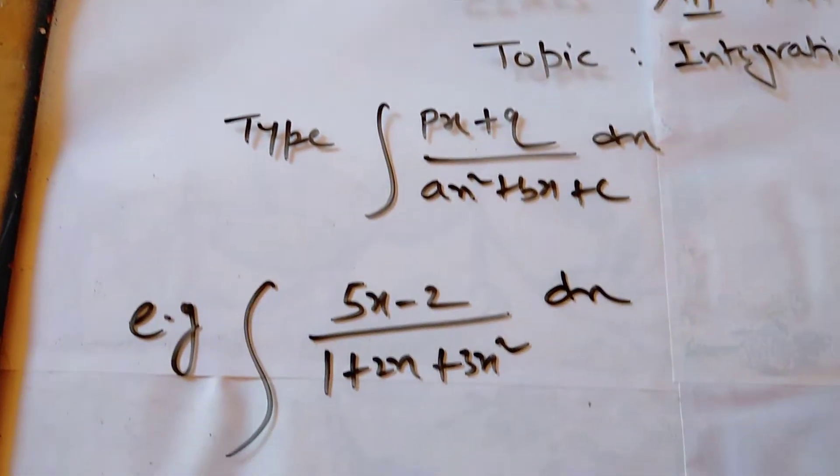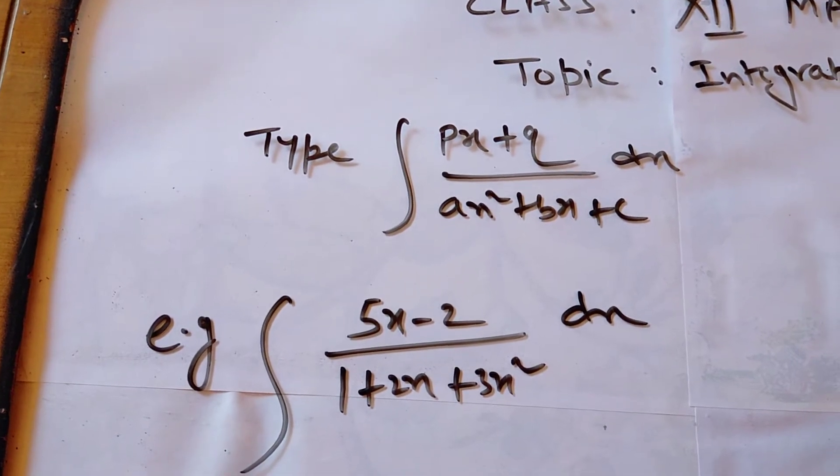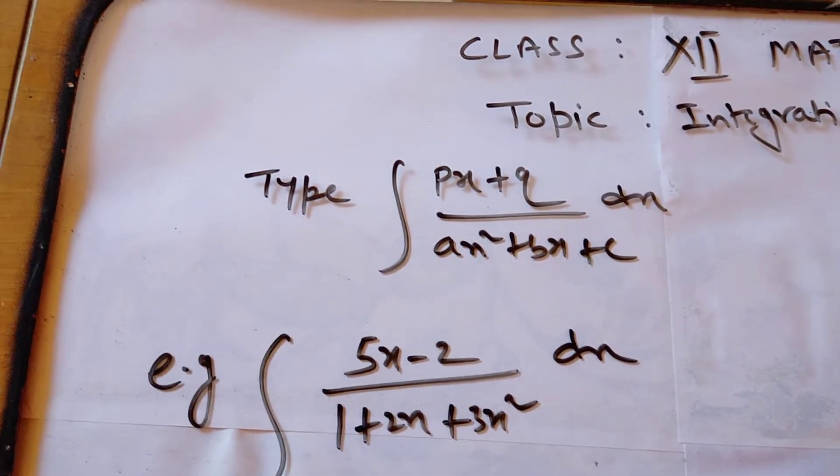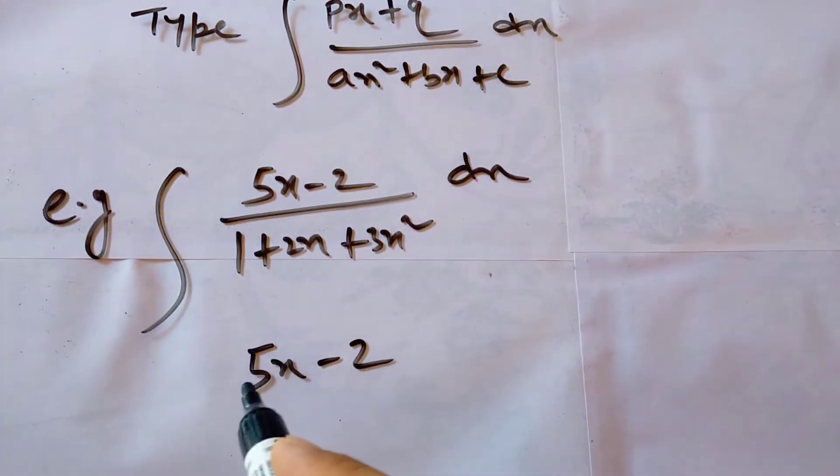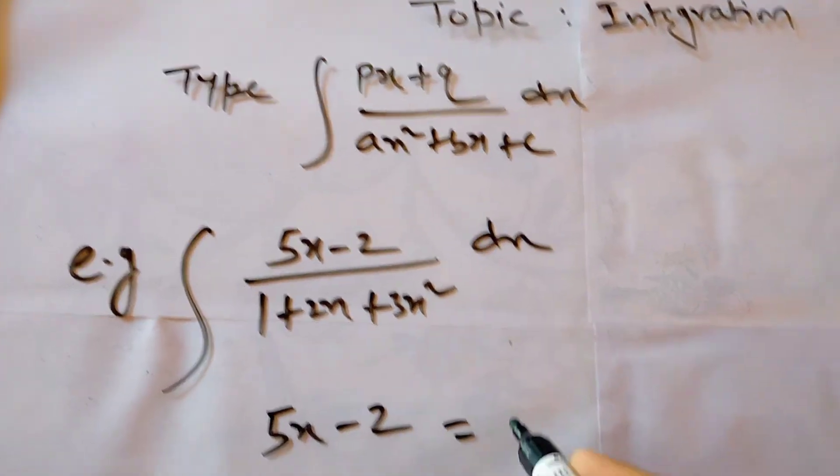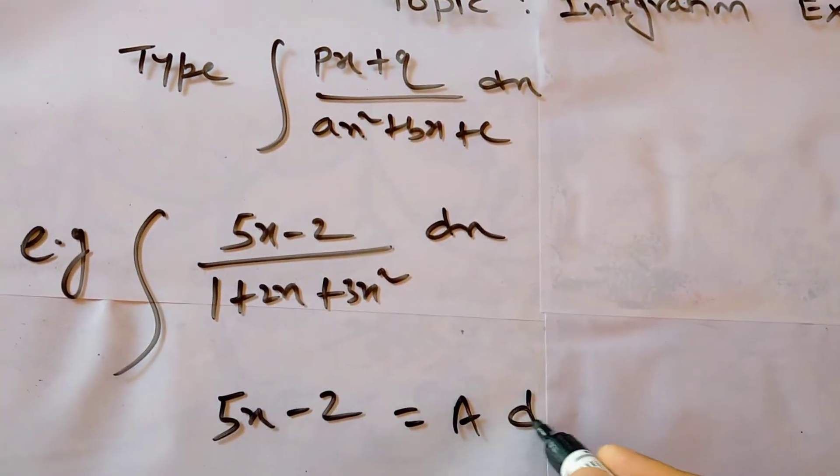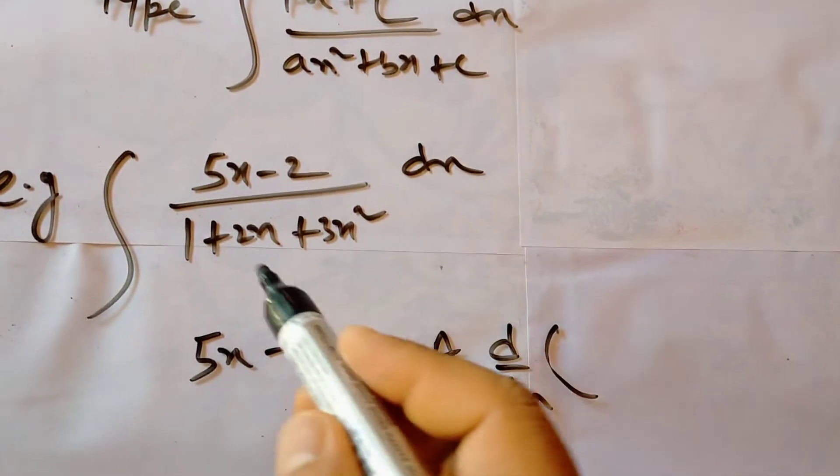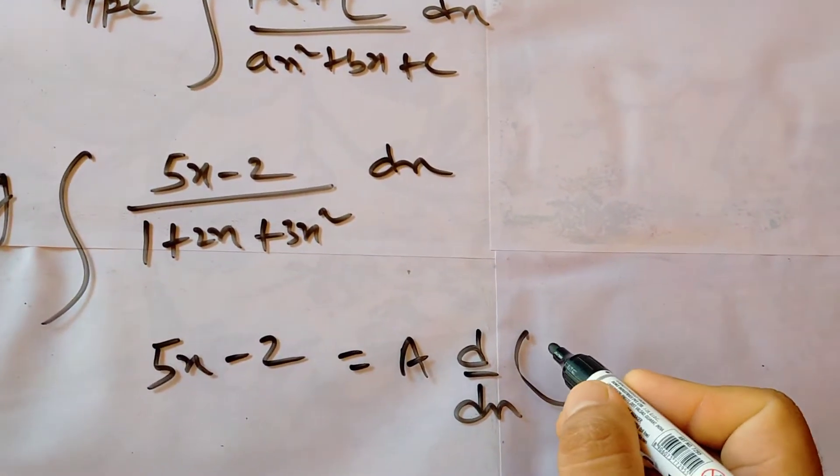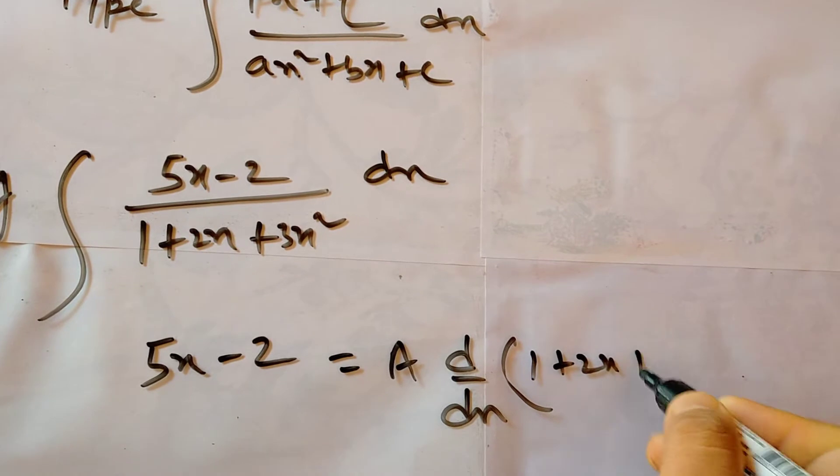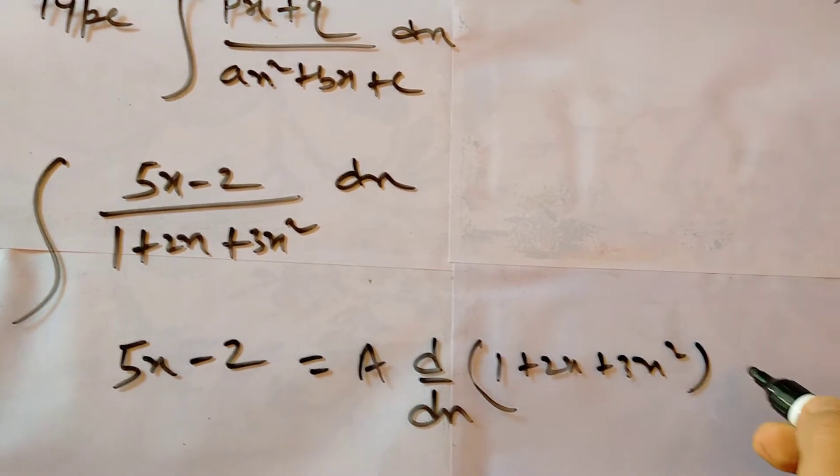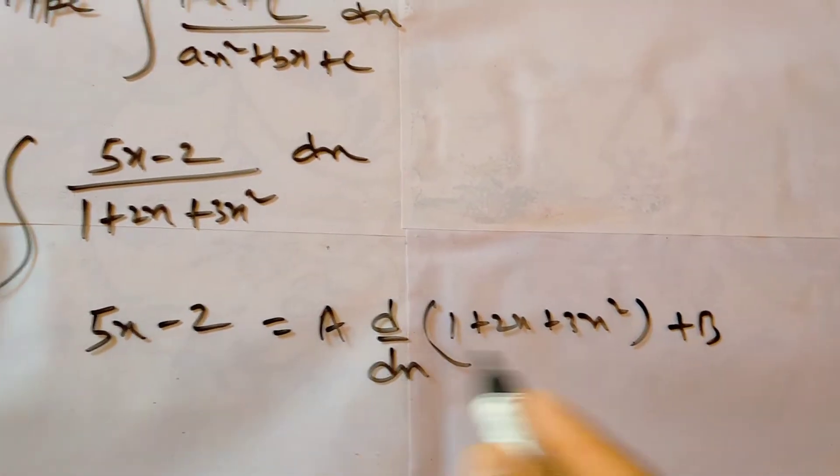Without using this integration sign, you should copy this 5x minus 2, means only denominator part. Then you write A into d/dx of denominator, so denominator ka differentiation. Here, 1 plus 2x plus 3x square, plus B.